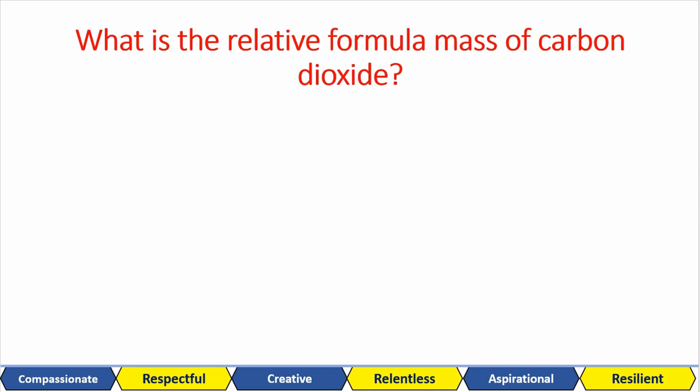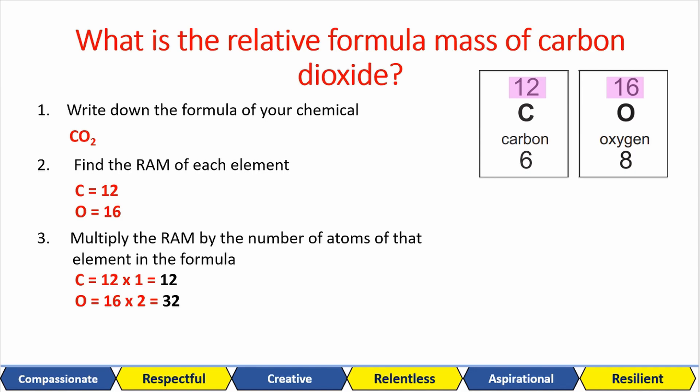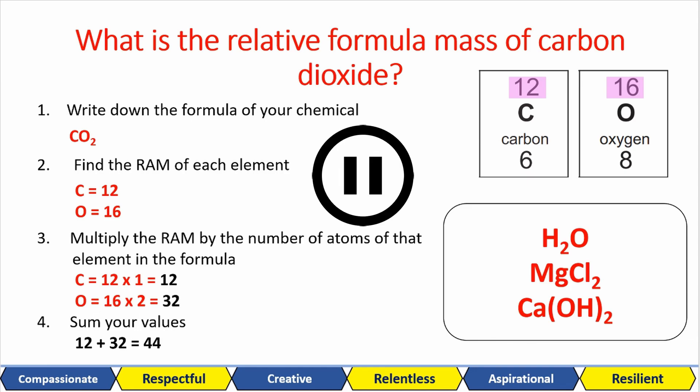I'll do this work example. Then you can work out the others. In this example, I need to work out the relative formula mass, the RFM for carbon dioxide. Step one, the formula is CO2. Step two, carbon is 12 and oxygen is 16. Step three, I have one carbon. So that's 12 times one equals 12 and I have two oxygen. So 16 times two gives us 32. And then step four, 12 add 32 gives us a relative formula mass for carbon dioxide of 44. Now work out these chemicals, pause, attempt and play.